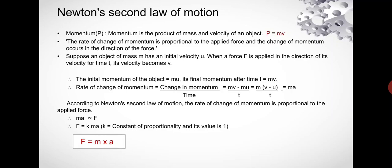Therefore, the formula for Newton's second law of motion is given by F = m × a, where F is force, m is mass, and a is acceleration.